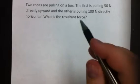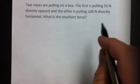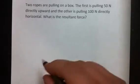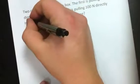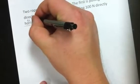This problem gives two ropes are pulling on a box. The first is pulling 50 N directly upward, and the other is pulling 100 N directly horizontal. What is the resultant force? Now, I want you to note, instead of horizontal, I want you to say to the east. That way it gives you the actual direction.